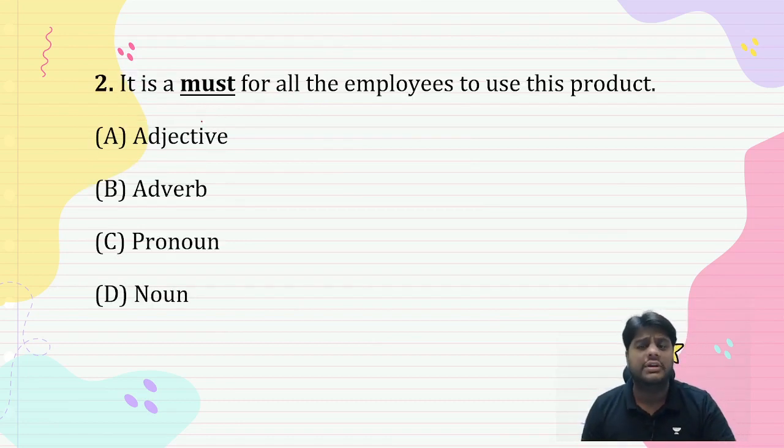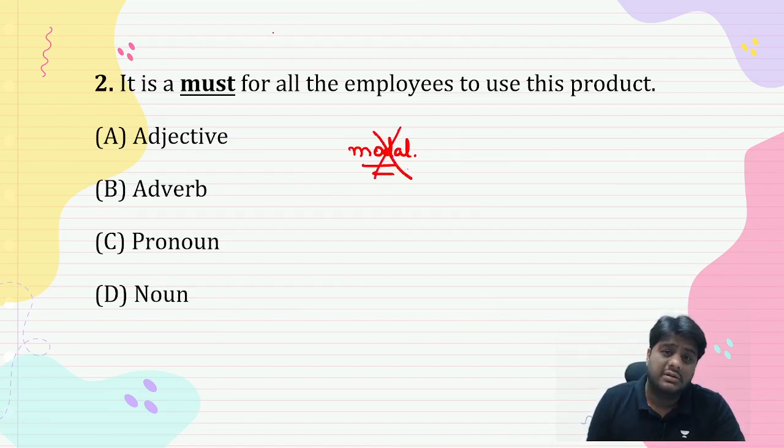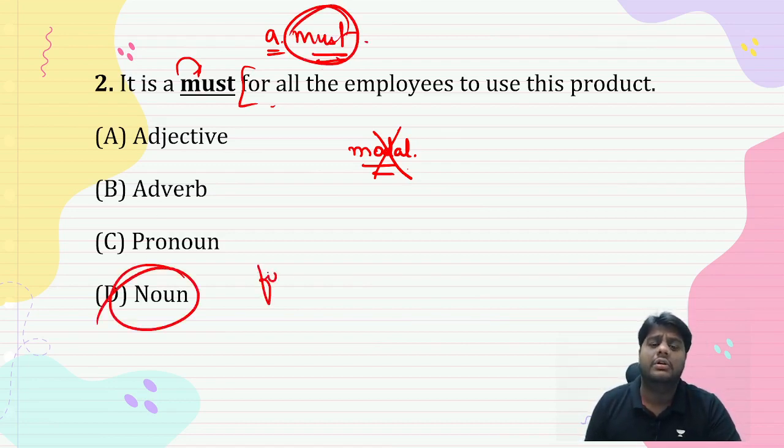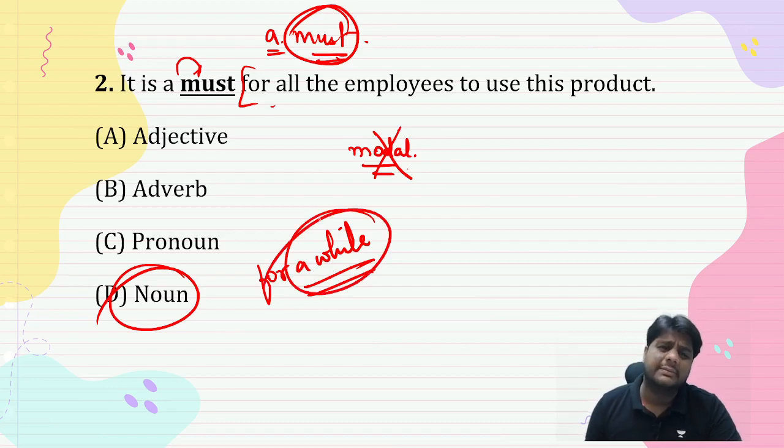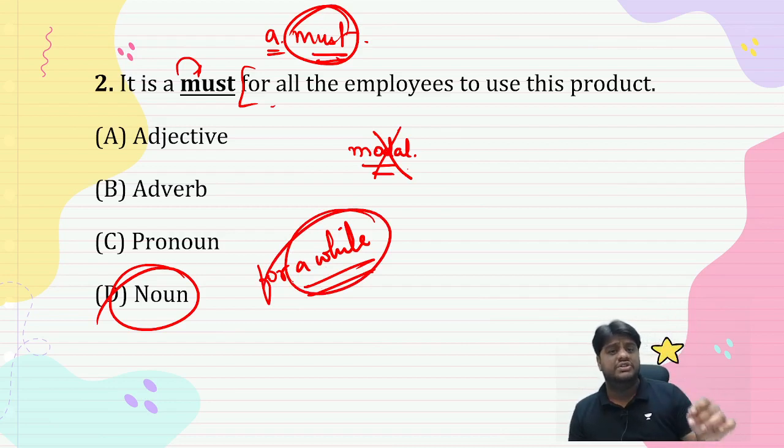It is a must for all the employees to use this product. Now brother, technically if you think, 'must' is what? It's a modal - would, could, should, may, might, ought, must, had to etc. are modals. But if you look carefully, this is not a modal. 'A' is attached. 'A' is an article. Article is only and only for nouns. So the matter is finished. So 'a must', right? So must has become what here, guys? A noun. Like many such cases - wait for a while, for a moment, right? So these things you have to keep in mind. In the exam, in options, I have made it easy for you, right? They will definitely give you modal verb in the options. Modal verb they will definitely give. Brother, it's not even a verb, how can you apply it? Are you getting it?